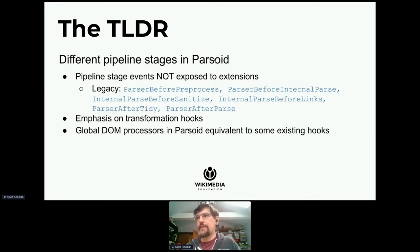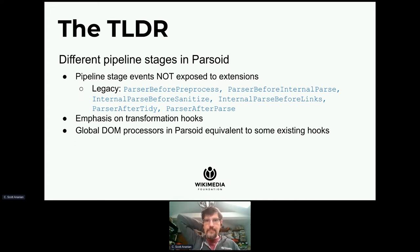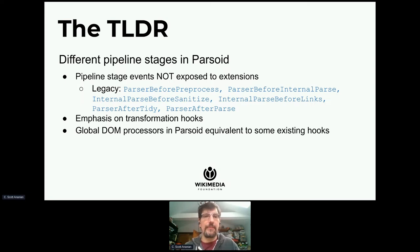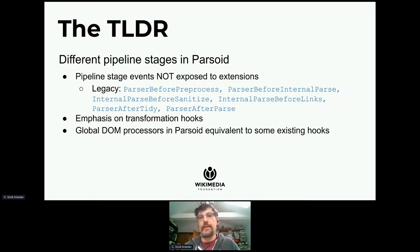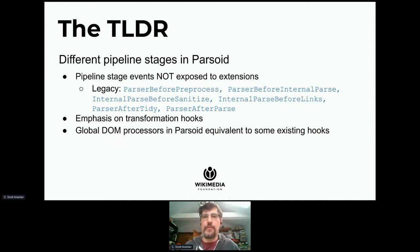One of the big differences that's not going to change: the legacy parser exposed a very fine-grained set of intermediate results tightly tied to how the legacy parser did the parse — before preprocess, before internal parse, internal parse before sanitize, internal parse before links, parser after tidy, parser after parse. A lot of these gave you some mix of WikiText and HTML as a big string. Parsoid doesn't have the same stages, doesn't have any phase where we've intermixed WikiText and HTML, so fundamentally we can't support those hooks as-is.